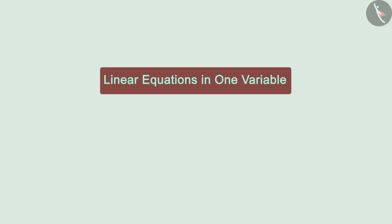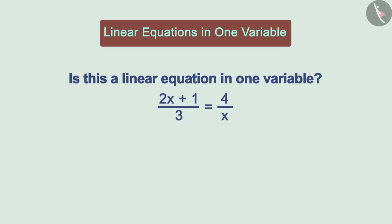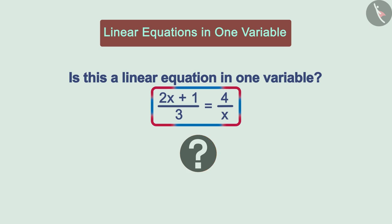Look at this equation. Can you tell me if it is a linear equation in one variable? We know that the equation is a linear equation in one variable when its highest power is 1. Notice that in this equation, the highest power of the variable is 1. So, this should be a linear equation, isn't it?